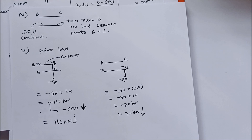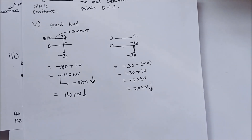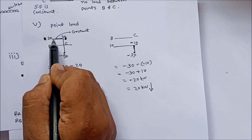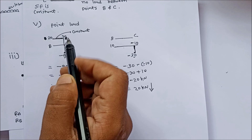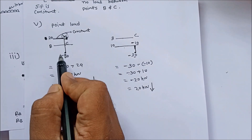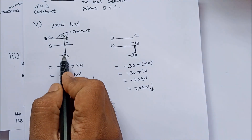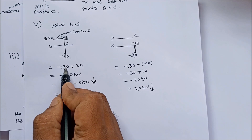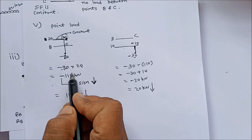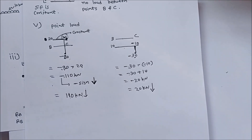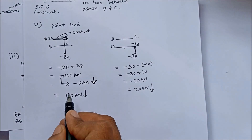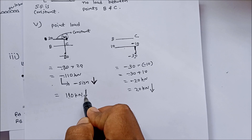Point load is also calculated using the equation: final minus initial. For example, shear force is constant between B and C at 20. At point C there are two values: 20 (initial) and minus 90 (final). So point load equals final minus initial: minus 90 minus 20 equals minus 110 kN. The negative sign shows that this point load is acting in the downward direction, so 110 kN acts downward.